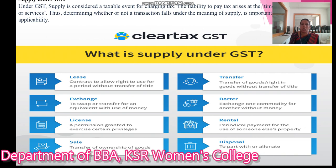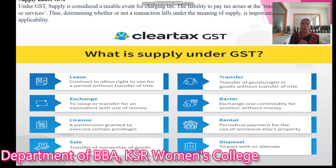Lease is a contract to allow the right to use for a period without transfer of title. Exchange means to swap or transfer for an equivalent with or without use of money. License is a permission granted to exercise certain privileges. Sale is the transfer of ownership of goods. Transfer means transfer of goods without transfer of title. Barter is the exchange of one commodity for another without money. Rental is a periodical payment for the use of someone else's property. Disposal means to part with or alienate. These are the forms of supply under GST. Thank you.